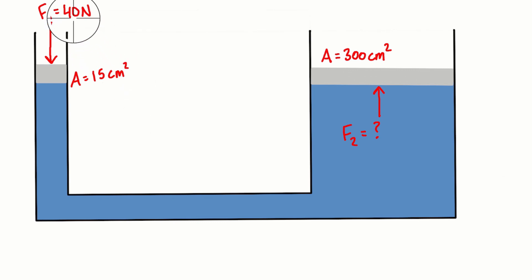So here on the left we have an applied force F1 pressing down of 40 newtons with a surface area of the piston of 15 centimeters squared. If we have 300 centimeters squared over on the other side, we want to figure out what is the upward force that is acting on that piston.